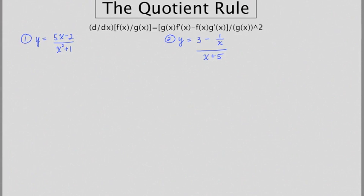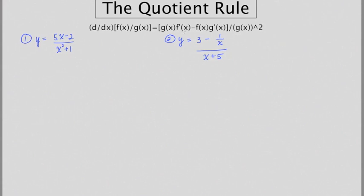Today's lesson is going to be on the quotient rule, which is a way for finding the derivative of a quotient of functions. It says that the derivative of f(x) divided by g(x) is going to be the bottom function times the derivative of the top function minus the top function times the derivative of the bottom function, all over the bottom function squared.